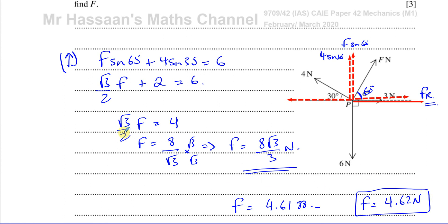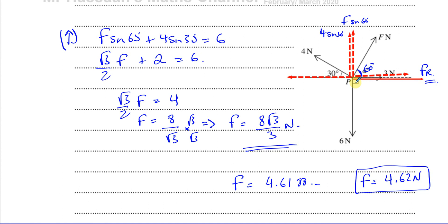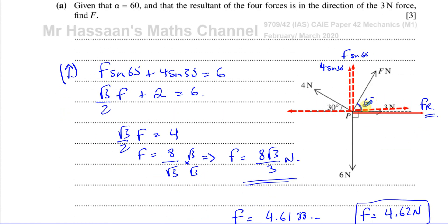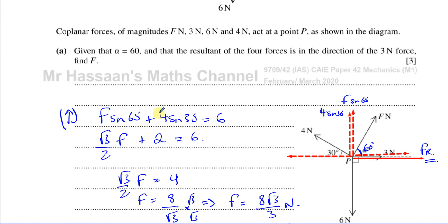So that's part A finished. We could have also resolved horizontally, but we don't know the actual magnitude of the resultant force. We could write F cosine 60 minus four cosine 30 equals the resultant FR, but since we don't know FR, we can't use it to find F directly. The key is that the resultant force is horizontal, so vertically everything balances: F sine 60 plus four sine 30 equals six, with F as the only unknown.